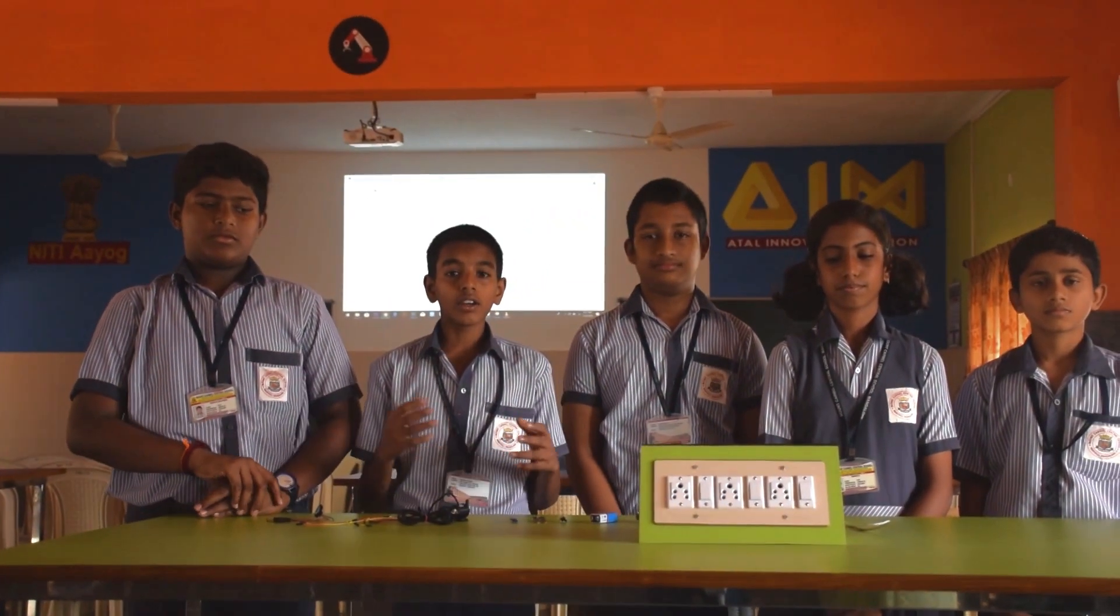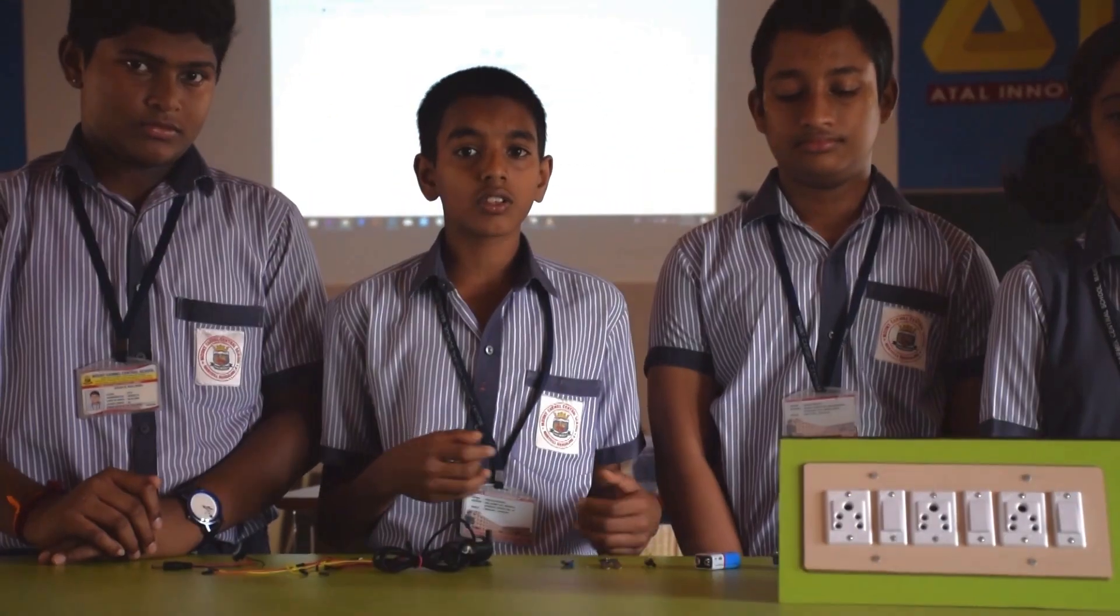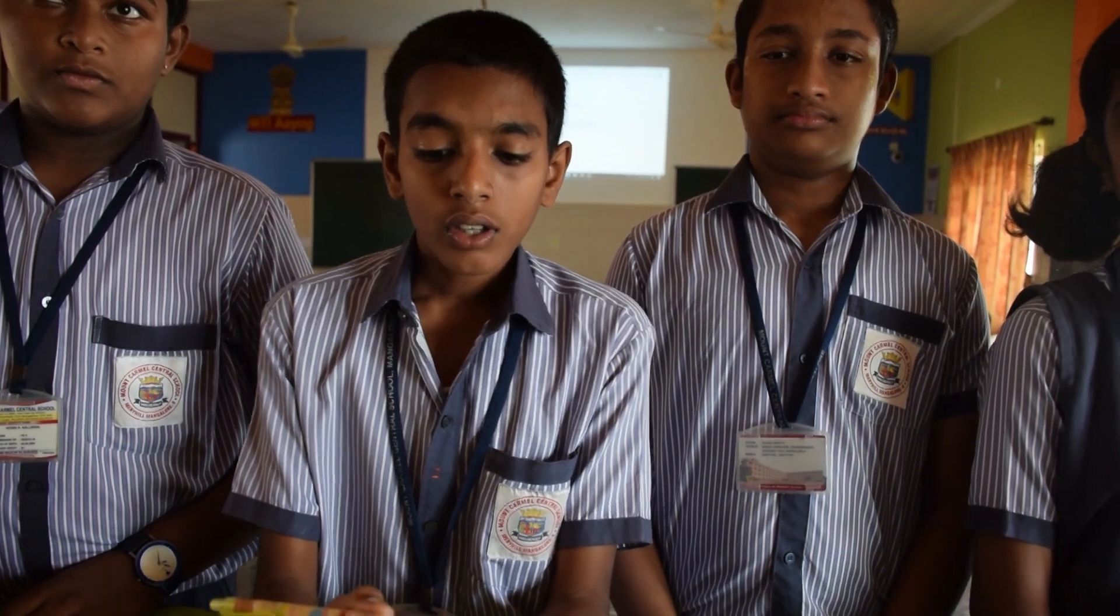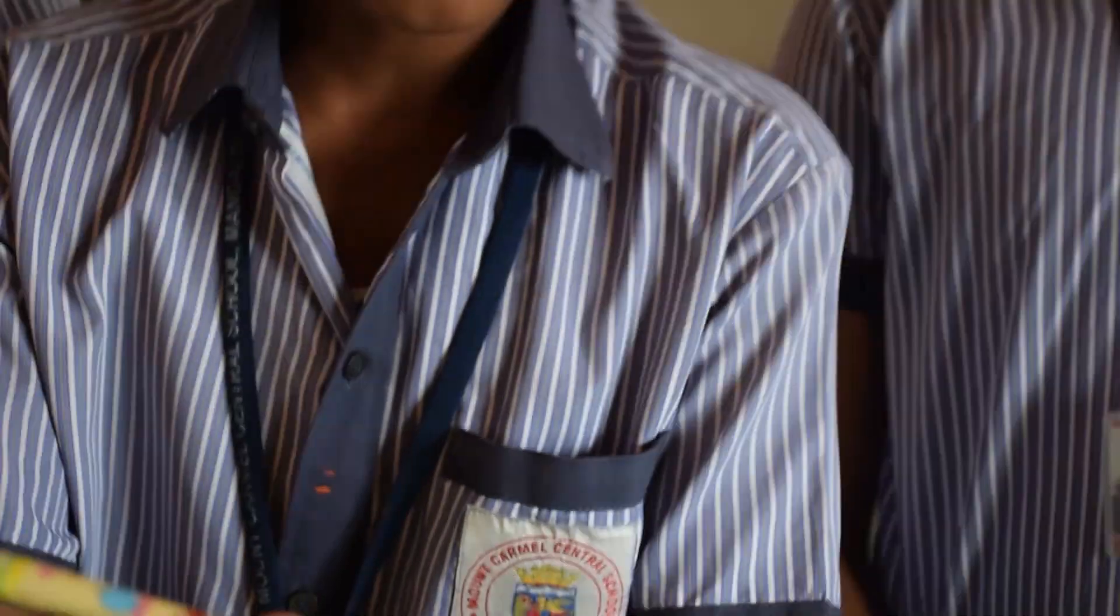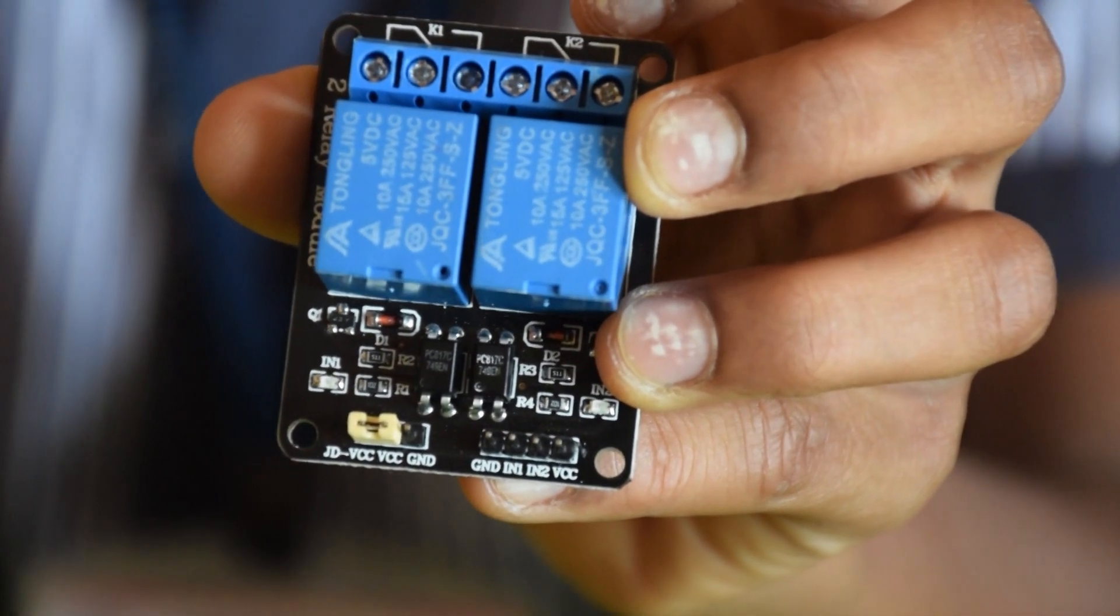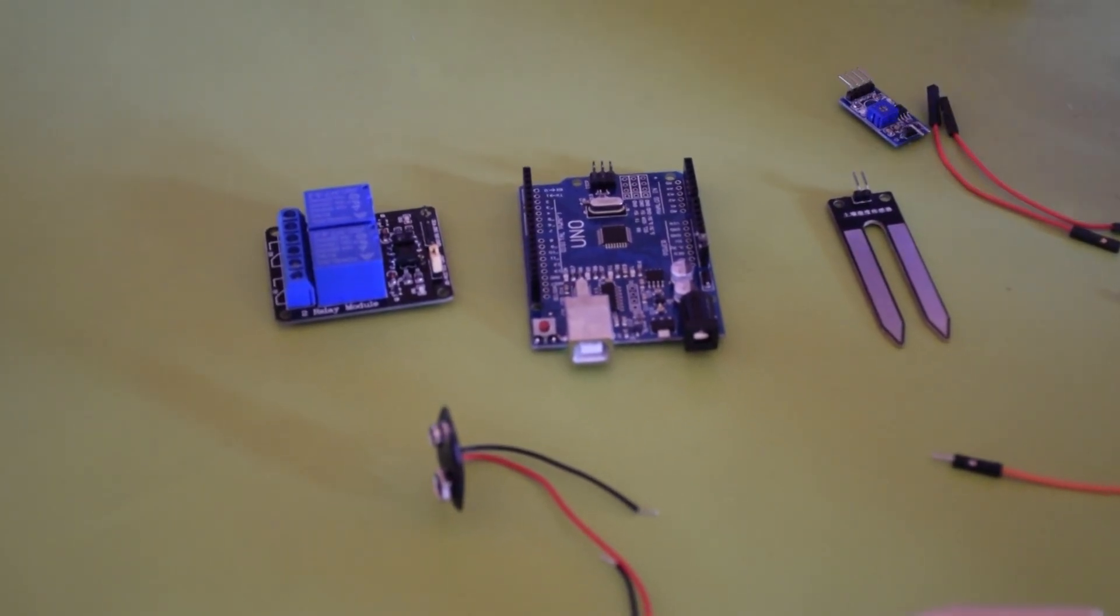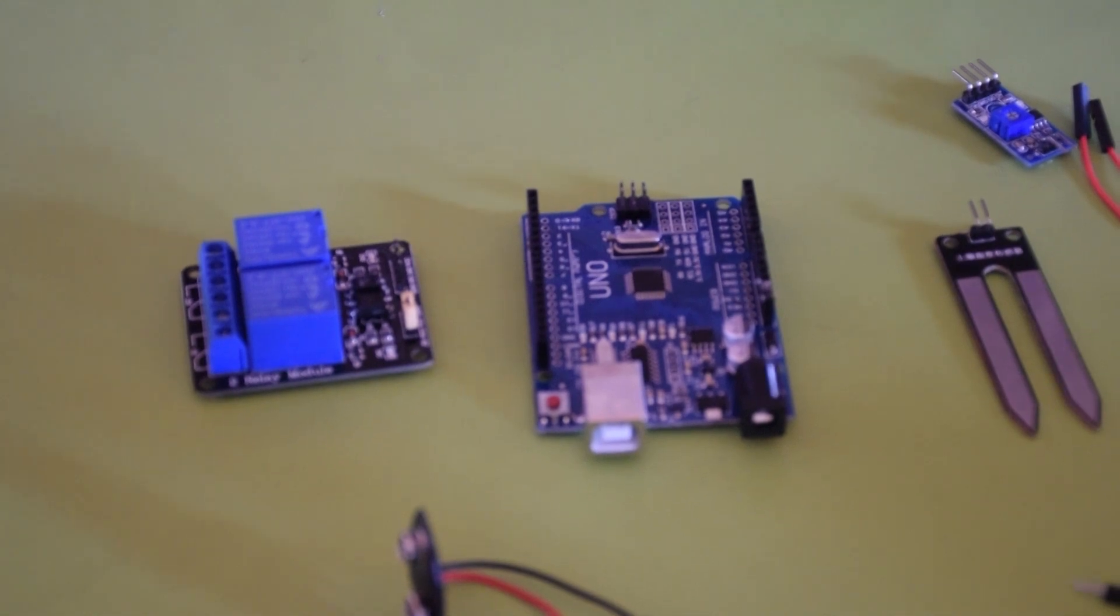Now, let us learn about the physical connections of our project. Step 1: There are 4 ports in the relay - the VCC, Input 1, Input 2 and the ground. We connect the VCC to the 5 volt output in the Arduino.